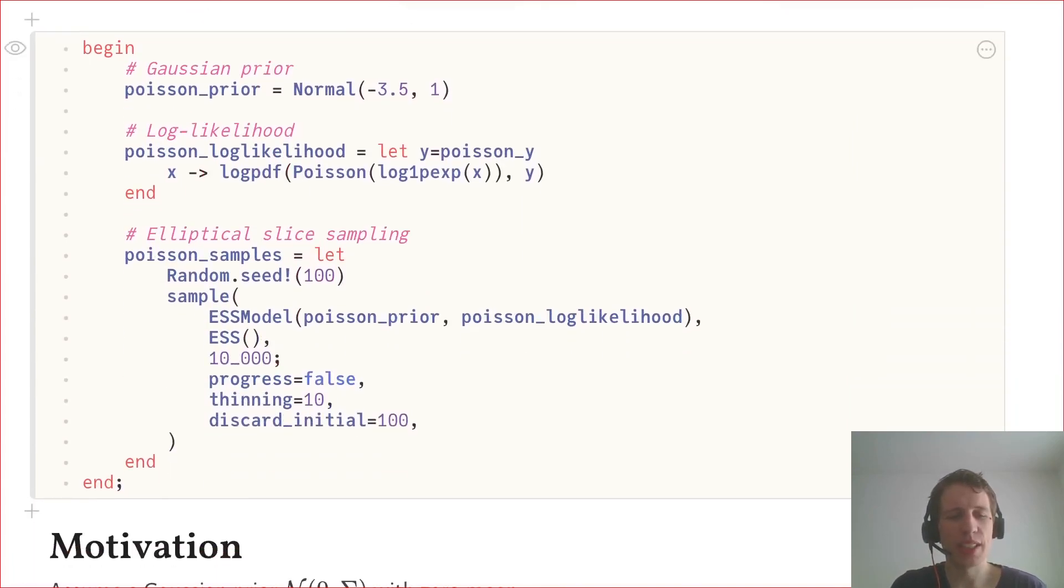And in the Julia code, the elliptical slice sampling happens in this sample call at the bottom of the code block.